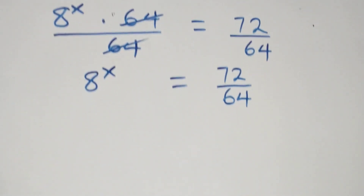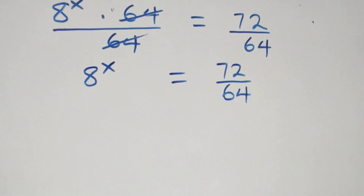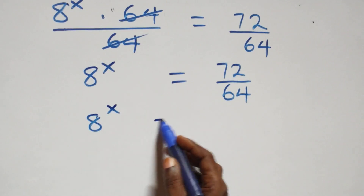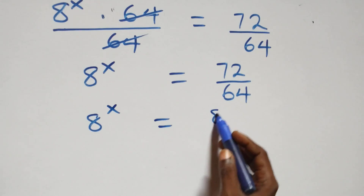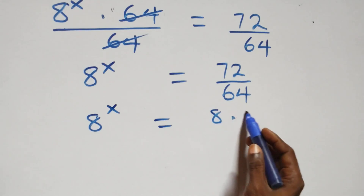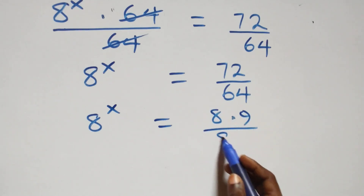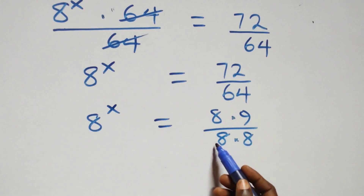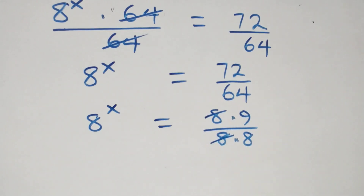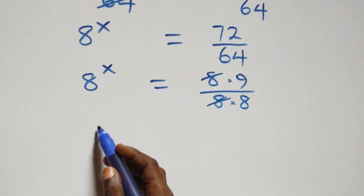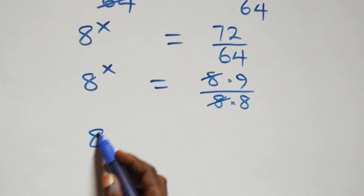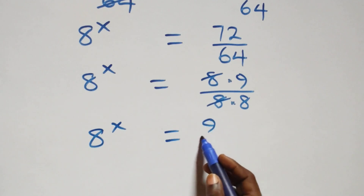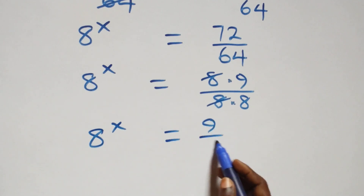The next step: this becomes 8 raised to power x equals 8 times 9 over 8 times 8, which implies the 8s cancel each other, and we are left with 8 raised to power x which is equal to 9 over 8.